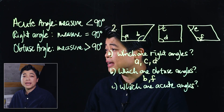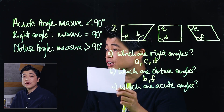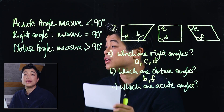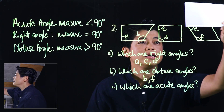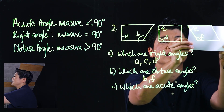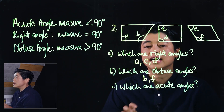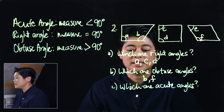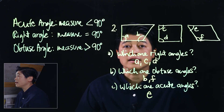Finally, it asks for what is an acute angle. To determine this, you put the corner, and if you don't see the angle after you place it, that means that's an acute angle. If I put it on this edge and I don't see it, that means angle E is an acute angle.